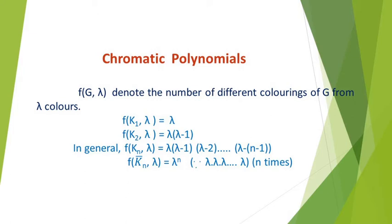For example, we find the value for a complete graph on n vertices. The first value is f(K1, lambda). Here K1 is a complete graph on one vertex, so there are lambda possibilities of assigning colors to the vertex in K1. So we have f(K1, lambda) = lambda.